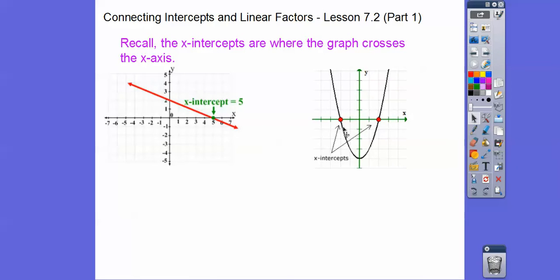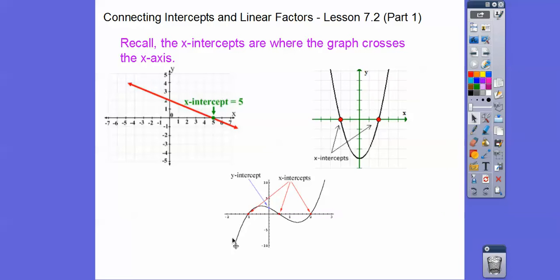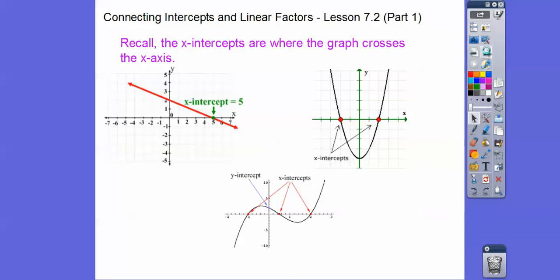This quadratic has two x-intercepts right here, and later we'll be doing graphs like this — when you get a graph that looks like this, it would have three x-intercepts. So x-intercepts are where the graph crosses the x-axis.